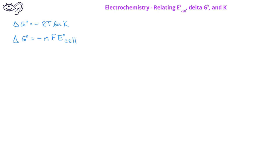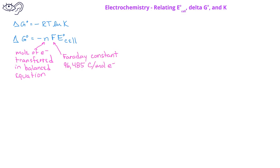In this equation, the lowercase n is the moles of electrons transferred in the balanced chemical equation. The capital letter F is the Faraday constant with a value of 96,485 coulombs per mole of electrons. And E°cell is the standard cell potential in volts, which is the same as the units of joules per coulomb.